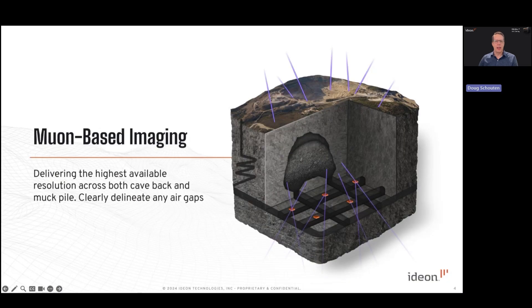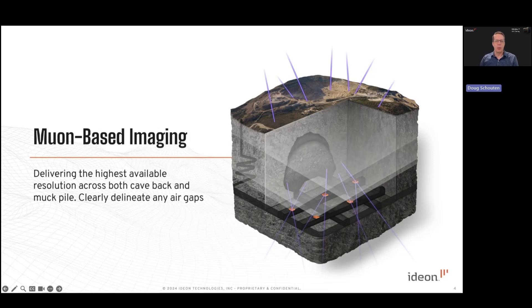In practice, we situate a proprietary detector platform within the extraction level and optionally in adjacent boreholes. Each detector location maps density within a wide field of view on a continuous basis. By combining the fields of view of a distributed array of detectors, we can map the cave back, any air gap that may exist, and density variability within the muck pile fully in 4D — that is, in 3D and also across time.